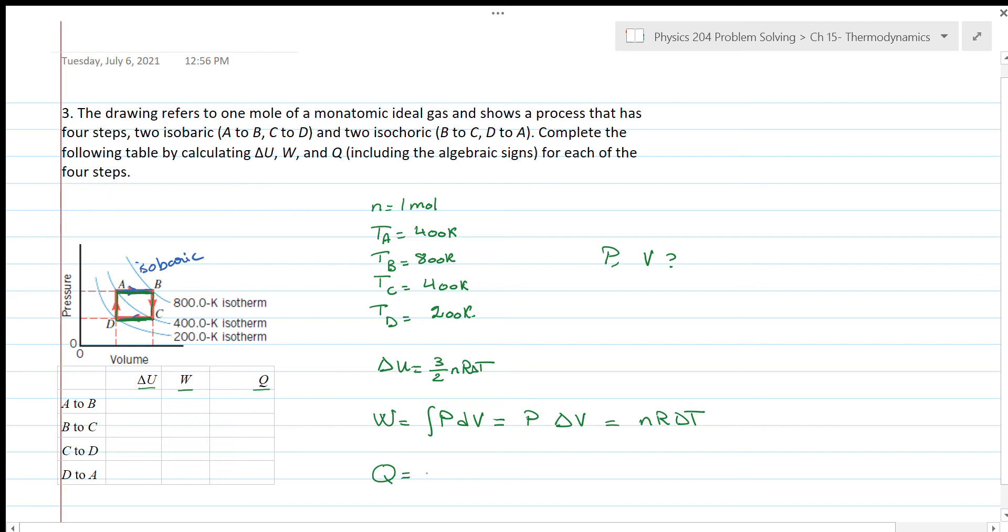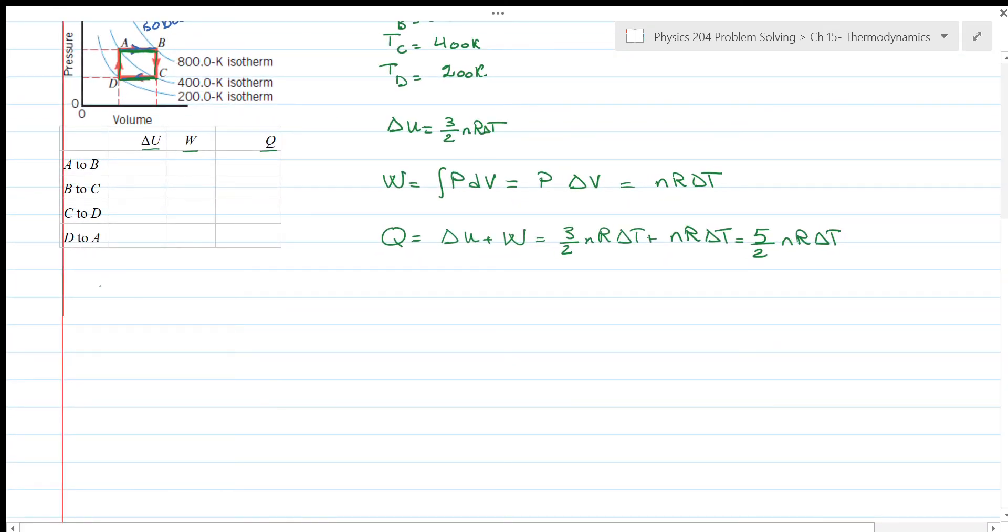And finally for Q, we know from the first law of thermodynamics that you can write Q as the addition or the sum of the change in internal energy and the work. So if we add up the two formulas, we get a formula for the heat as well. And I guess now all we can do is just apply these formulas for the different processes.